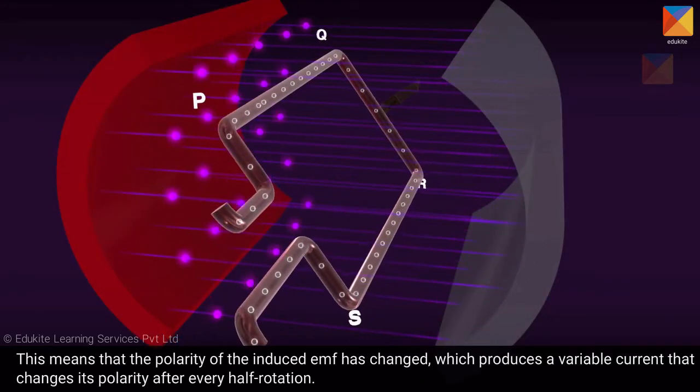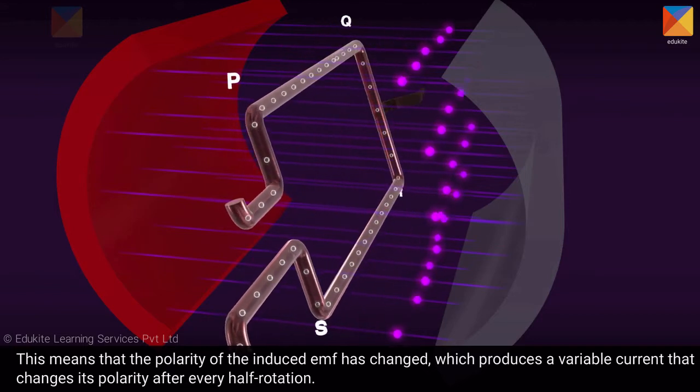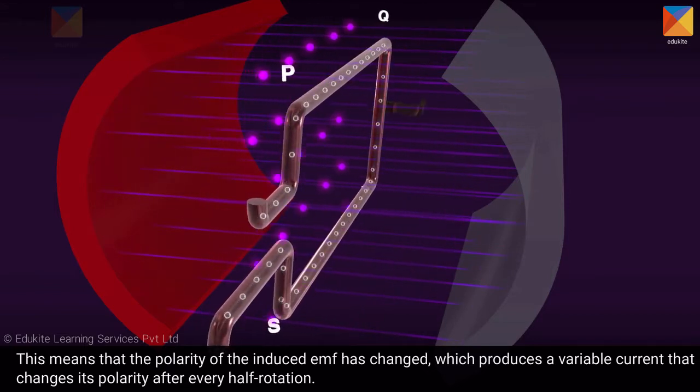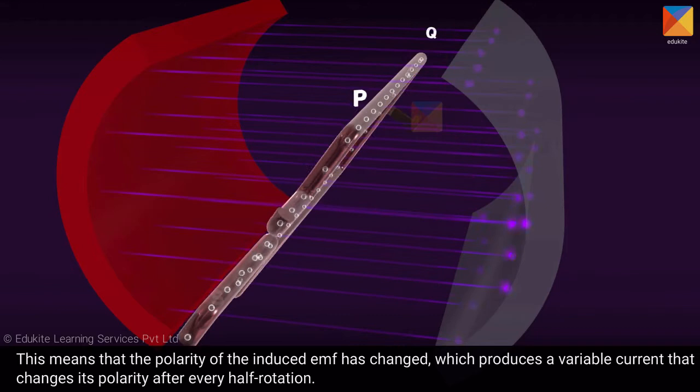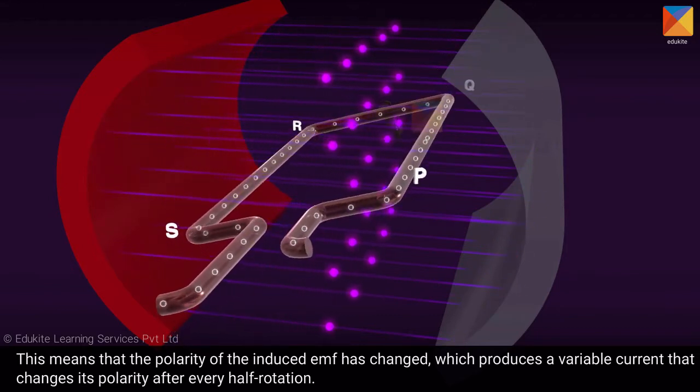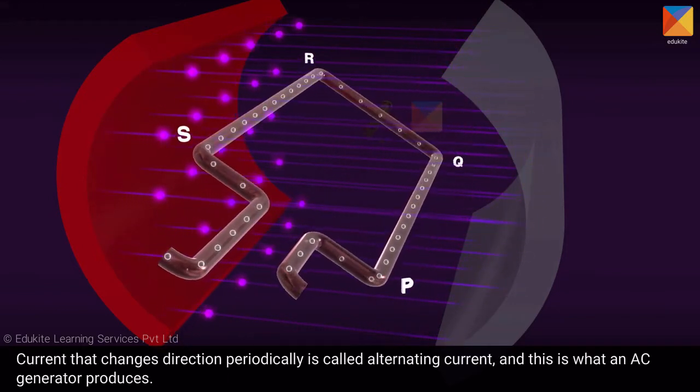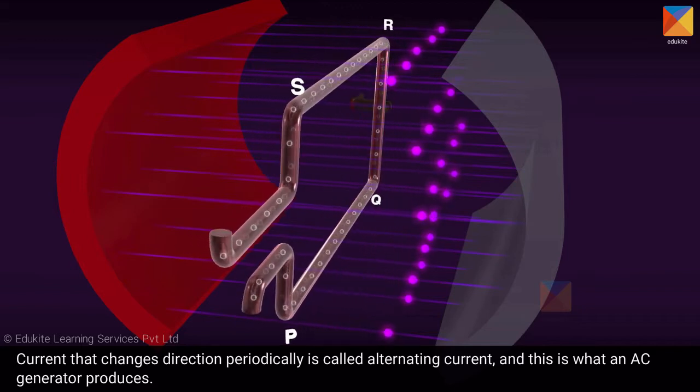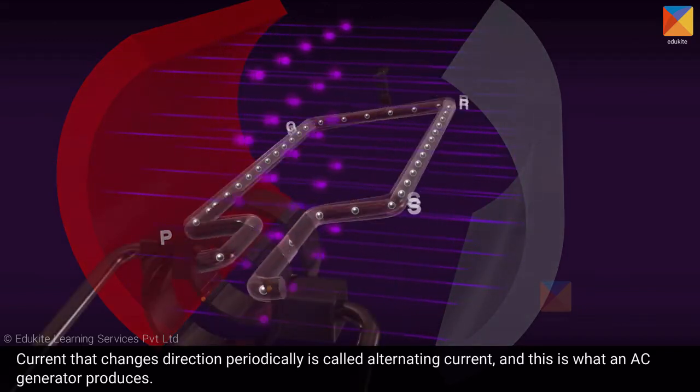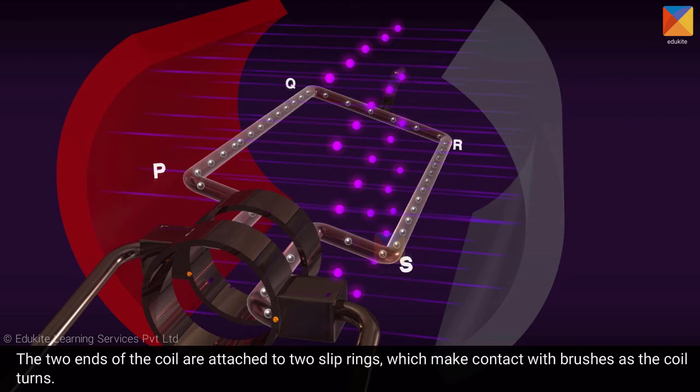This means that the polarity of the induced EMF has changed, which produces a variable current that changes its polarity after every half rotation. Current that changes direction periodically is called alternating current, and this is what an AC generator produces.